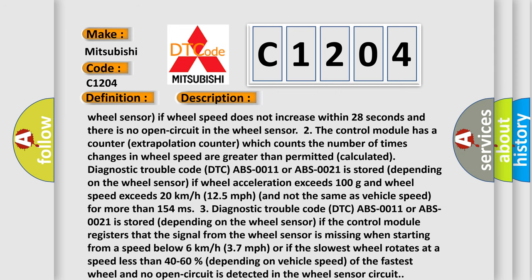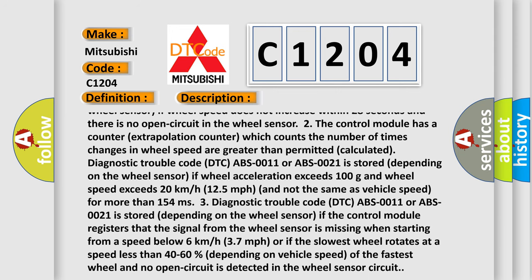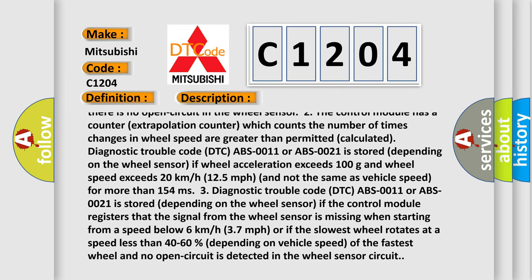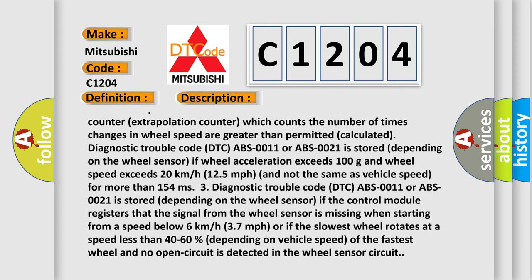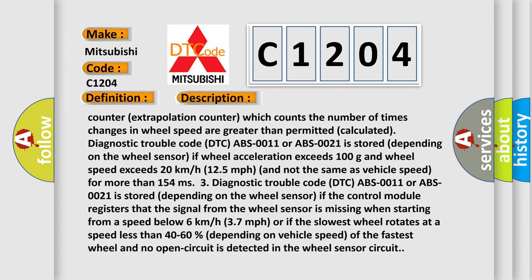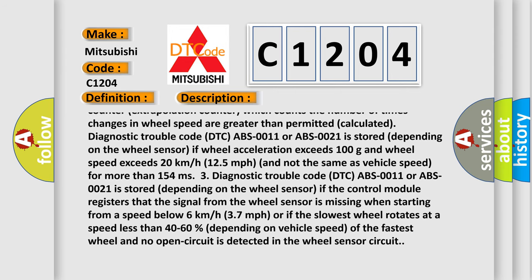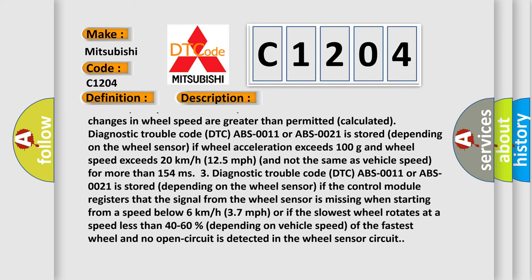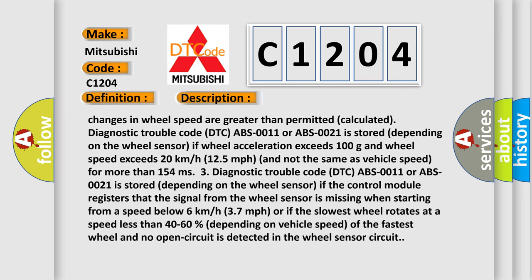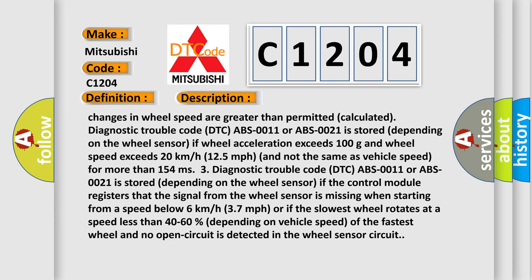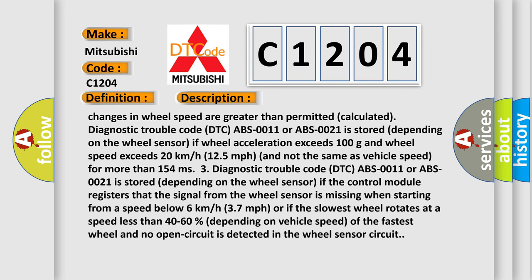Two: if the control module registers that the signal from the wheel sensor is missing when starting from a speed below 6 kilometers per hour, or if wheel acceleration exceeds 100 g and wheel speed exceeds 20 kilometers per hour and is not the same as vehicle speed for more than 154 milliseconds, DTC ABS-0011 or ABS-0021 is stored. Three: if the slowest wheel rotates at a speed less than 40 to 60 percent — depending on vehicle speed — of the fastest wheel, and no open circuit is detected in the wheel sensor circuit, the corresponding DTC is stored.